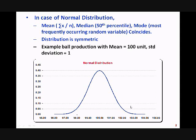A symmetric distribution means: if you take the mean — which is 100 — and go one standard deviation to the left, the frequency is the same as when you go one standard deviation to the right. Similarly, when you go two standard deviations to the left (say 100 minus 2 = 98), the frequency should be the same as two standard deviations to the right. So whatever frequency you get at 99, the same frequency you get at 101 — the distribution around the mean is the same on both sides.